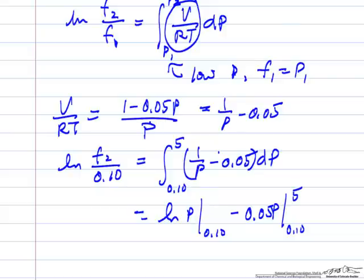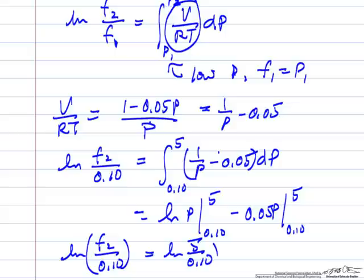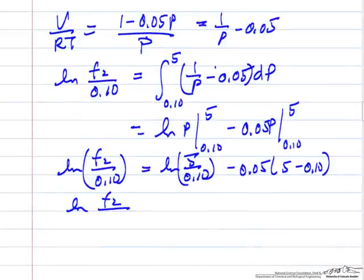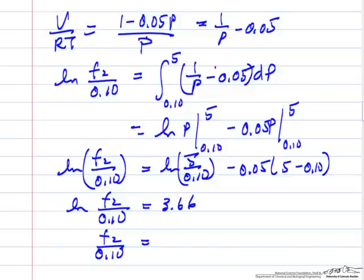This limit should be 5. So log of fugacity over 0.1 equals log of 5 over 0.1 minus 0.05 times 5 minus 0.1. This ends up, as we do the calculations, this is 3.66. We take the exponentials, fugacity 2 over 0.1 is 39.05. Fugacity 2 is 3.9 atmospheres.